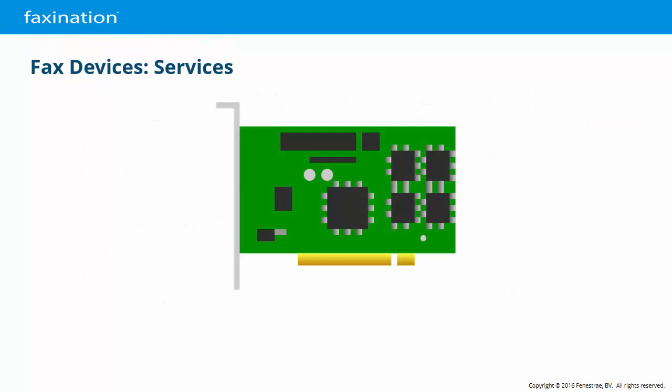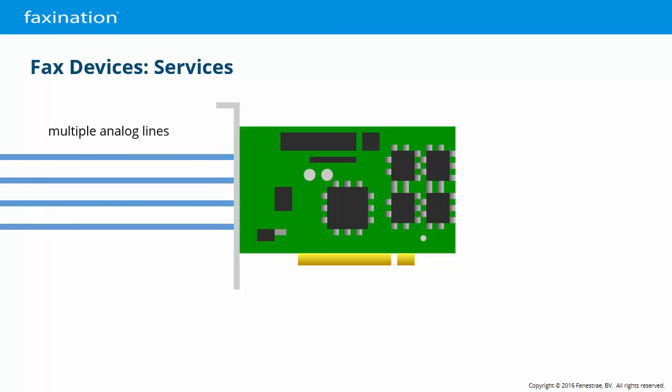There are two definitions of the word 'service' that are important to understand when working with FaxNation. We're all familiar with Windows services, which are background processes controlled by the operating system. In FaxNation, the BFAX TR-Extreme device connector runs as a Windows service. The other use of the word 'service' refers to how one or more lines or channels are configured on a fax device. Here we have a four-channel analog card, which we can configure as a single service or divide into as many as four separate services.